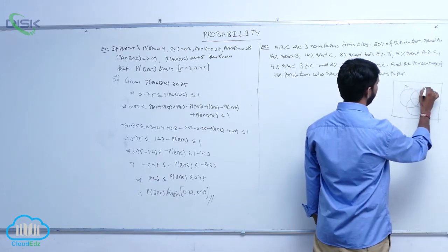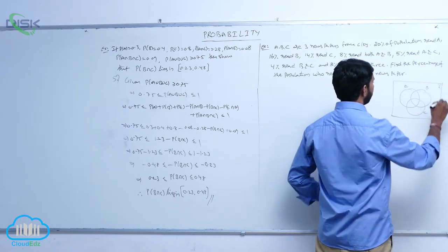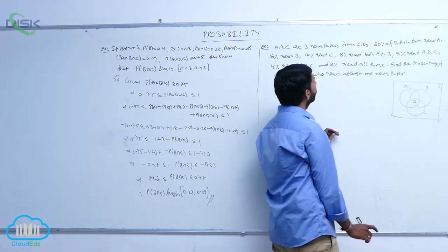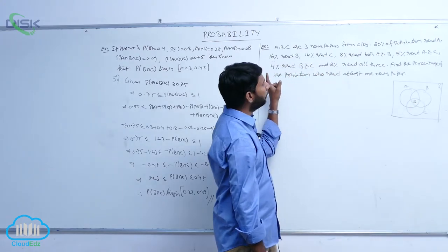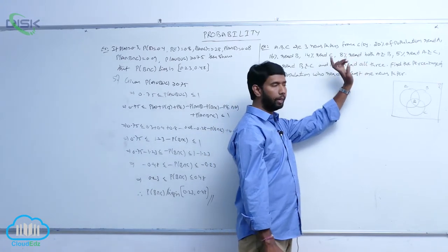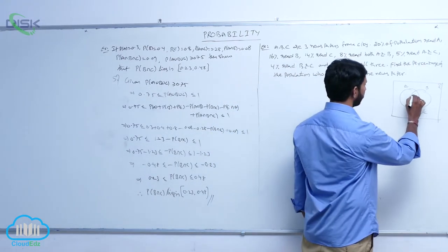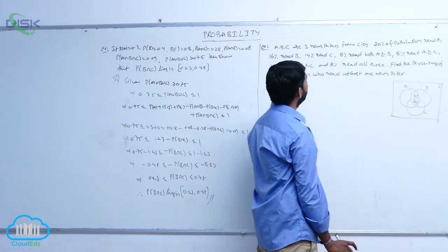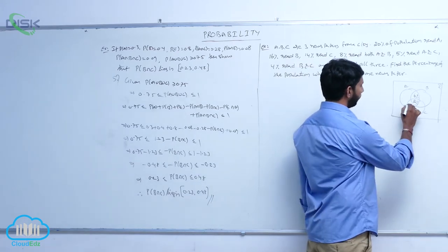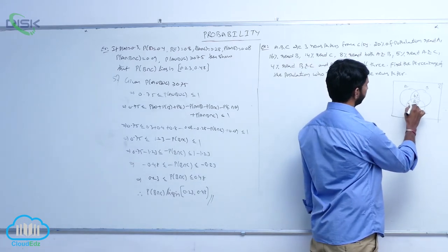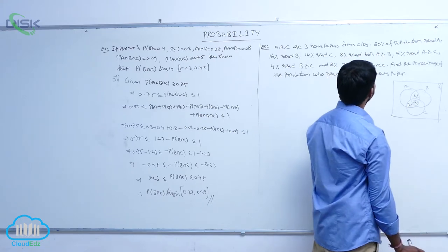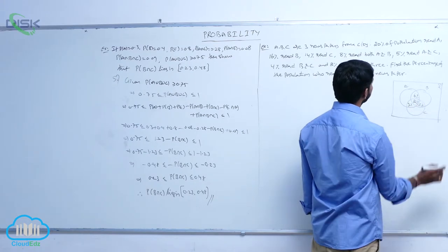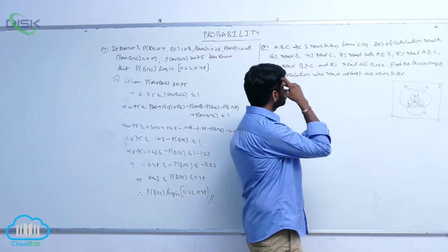Drawing the Venn diagram with paper A, paper B, and paper C within a sample space. Three newspapers: the region reading all three is 2%. A and B read both newspapers: 8%, with the remaining part being 6%. A and C read 5%, remaining part 3%. B and C read 4%, that is 2% each in the overlapping parts.